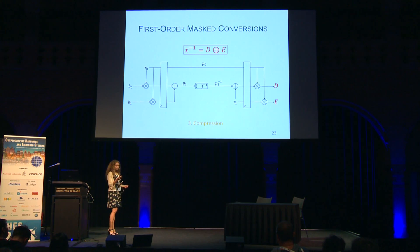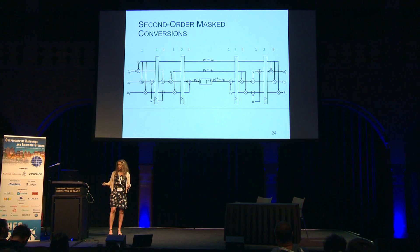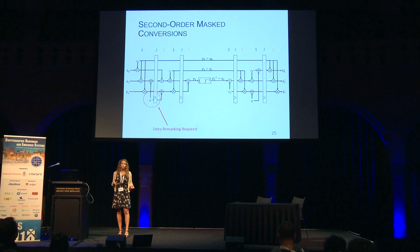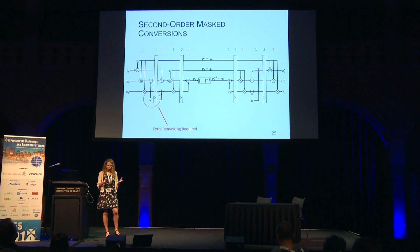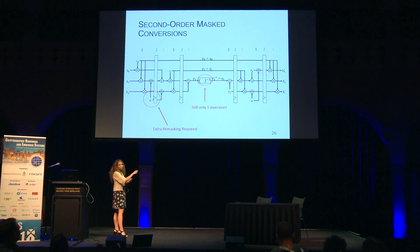Going back to Boolean sharing uses the same three steps: expand to three shares with an extra Boolean share, synchronize to stop glitches, then compress back into two shares by multiplying the multiplicative shares with each Boolean share. The second-order case is very similar — three stages of expansion, synchronization, and compression. We found a flaw in previous works using this methodology and solved it by adding extra remasking to make the circuit second-order secure. Notably, regardless of order — four, five, or more shares — you always need only one local Galois field inversion, which is great for scalability.